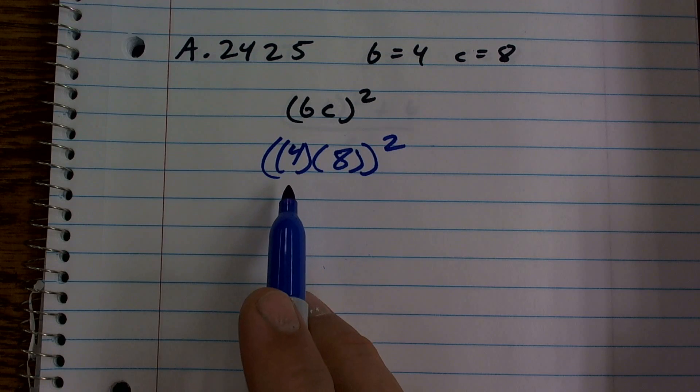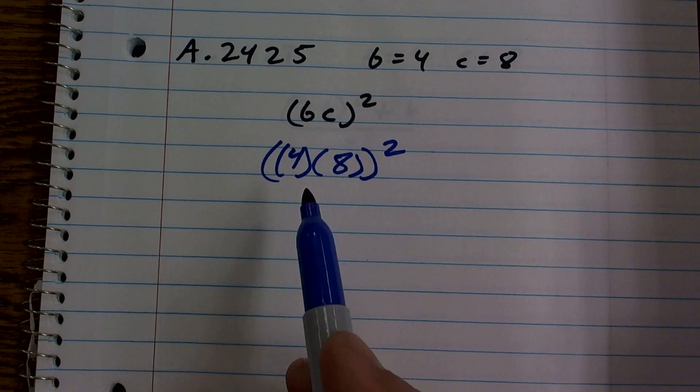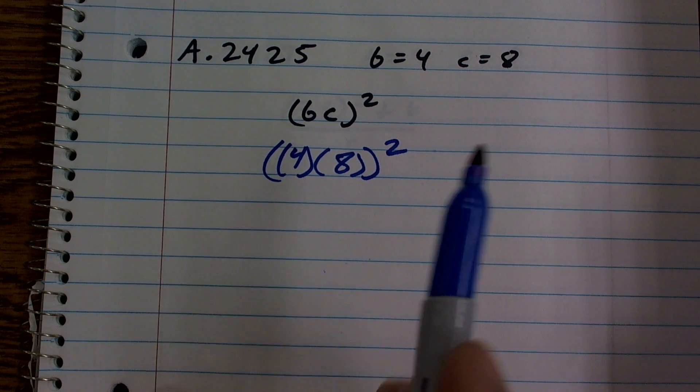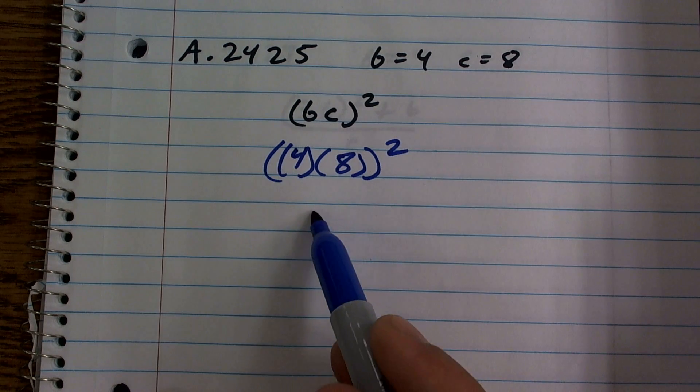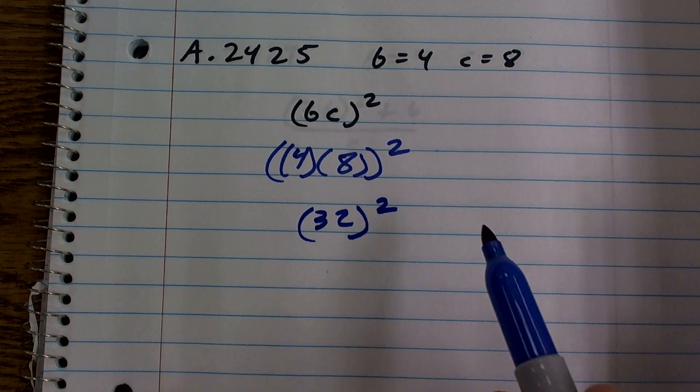So now I just need to follow my PEMDAS or follow my rules of order of operations. 4 times 8 is going to give me 32. Square it.